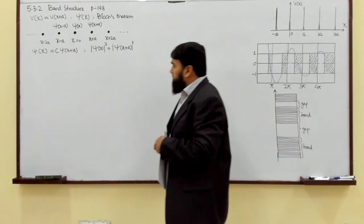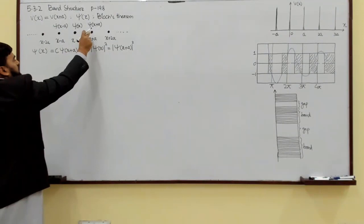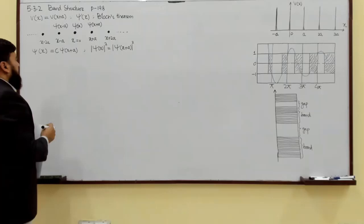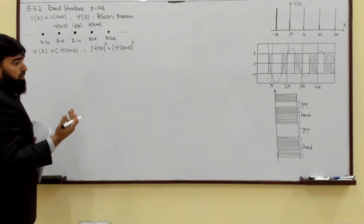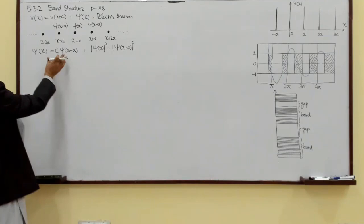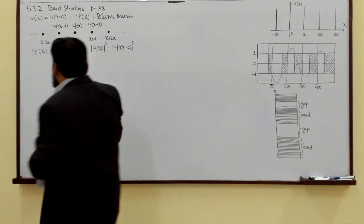The electron is equally probable at each atomic site, since the potential at all these points is the same. There is no difference at all. We have calculated similar things for the infinite square well and for a finite potential well. Let's see what the situation will be here.